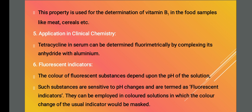Using fluorescent indicators we can identify what substance is present and find the endpoint by color change. They are used in colored solutions where color changes of normal indicators would be masked. Fluorescent indicators are substances sensitive to pH changes. In normal colored solutions, the color changes will not be seen by a normal indicator, so we use fluorescent indicators.